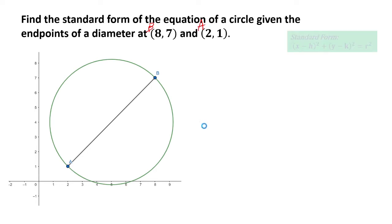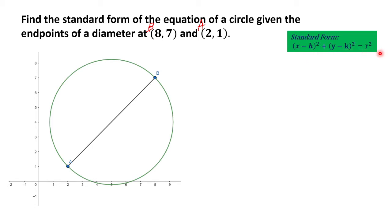Remember that the standard form of the equation of a circle would be the squared quantity of x minus h, plus the squared quantity of y minus k, is equal to r squared. Where (h, k) is the center and r is the radius of the circle.